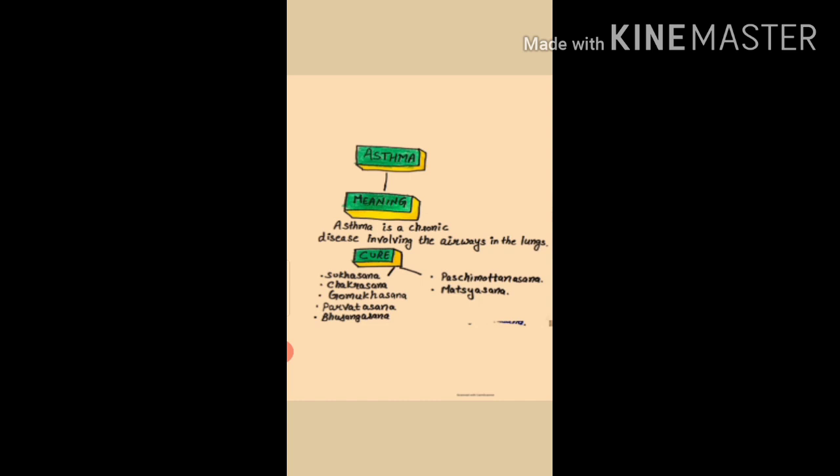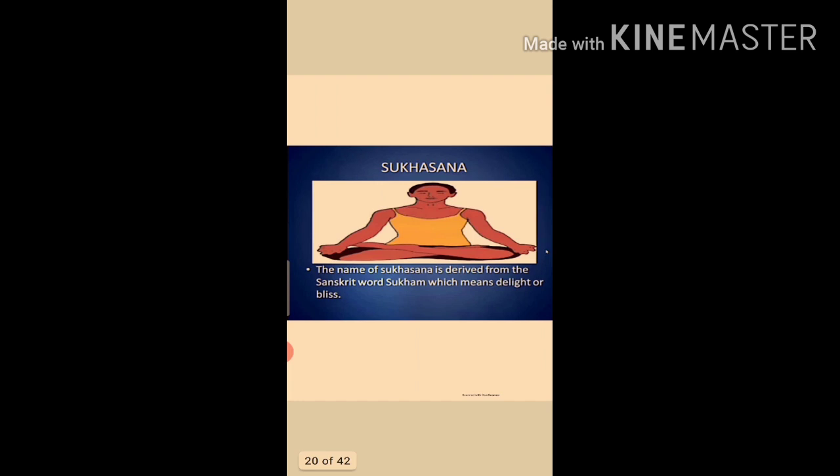Causes of asthma include: allergy, cold, obesity, sleep apnea, acid reflux, stress, and depression. In some cases it can be hereditary. Next, we will discuss Sukhasana. The name is derived from the Sanskrit word 'sukham' meaning delight or ease.